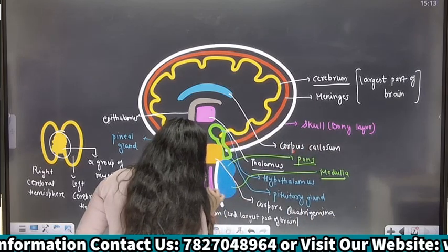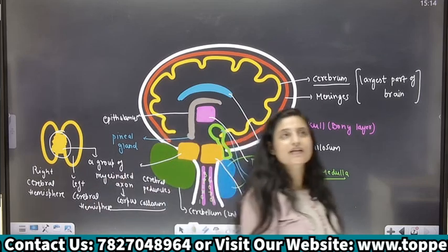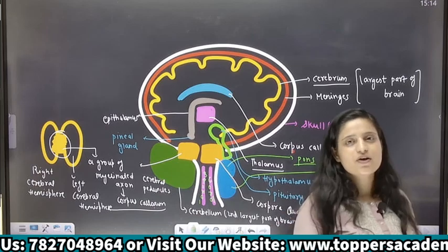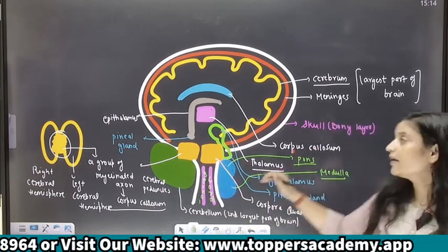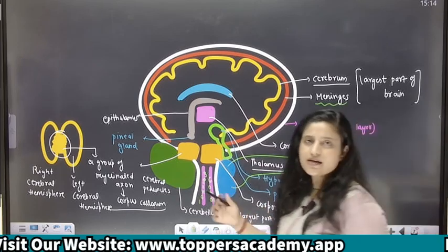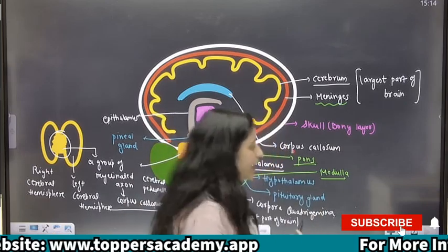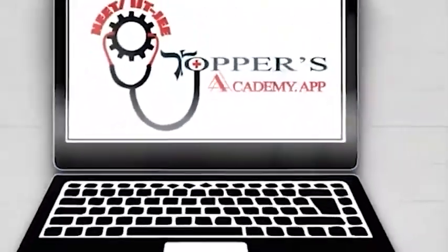This is your spinal cord. Tab hi jo brain ka CSF fluid hota hai, woh spinal cord mein aata hai. So that's all in the topic of brain. In next class, we will discuss the function of all these parts, and then meninges layers ke baare mein bataaungi — duramater, arachnoid matter, and pia mater. That all we will discuss in our next session. Thank you so much.